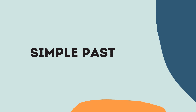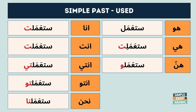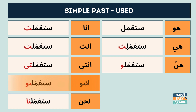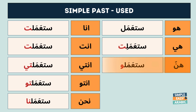Let's check out the simple past. أنا استعملت، انت استعملت، انتي استعملتي، انتو استعملتو، نحن استعملو، هو استعمل، هي استعملت، هنن استعملو.